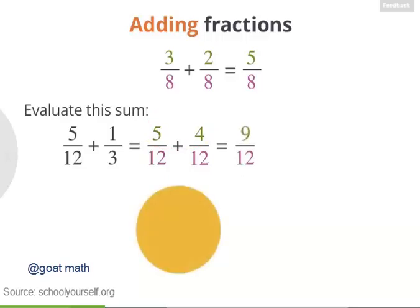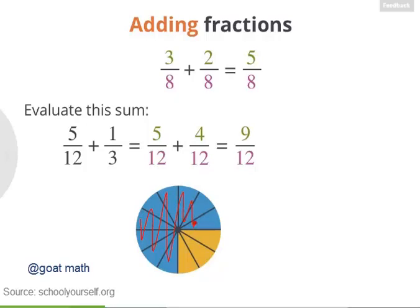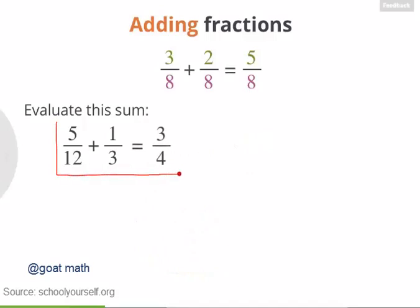Exactly. Now that these two fractions have the same denominator, you can keep that in the sum and then add the two numerators to get 9 twelfths. Let's make sure that's right. Here's a dot. Let's divide it into 12 equal pieces and shade in 5 of them — so here's 5 twelfths. We can also divide the dot into 3 equal pieces and shade in 1 of them. So this region here is 1 third. Adding them together gives us a total of 9 twelfths.